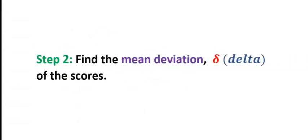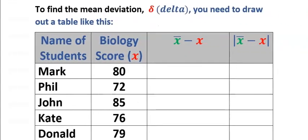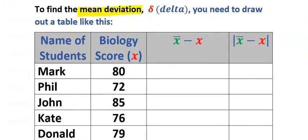Step number two, find the mean deviation. Mean deviation is denoted with delta. The first step towards finding mean deviation is to draw a table like this.